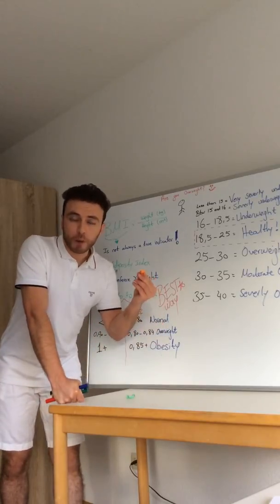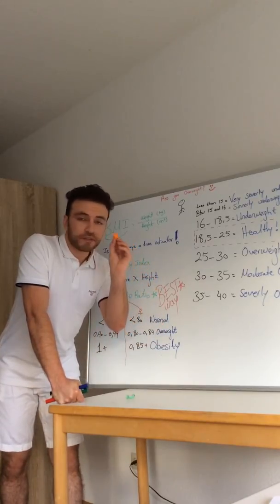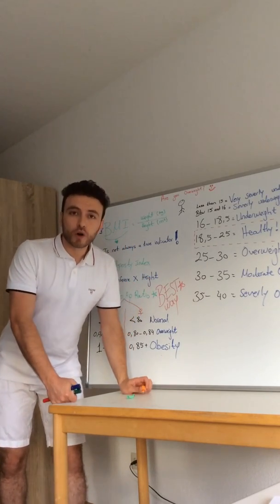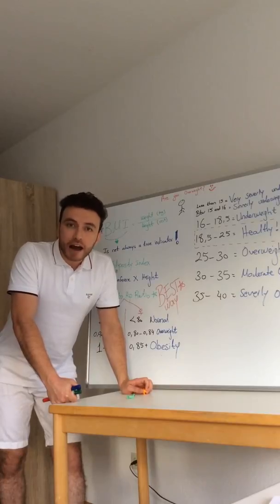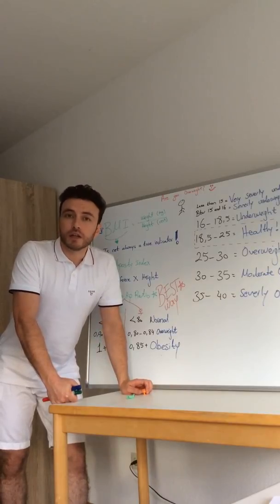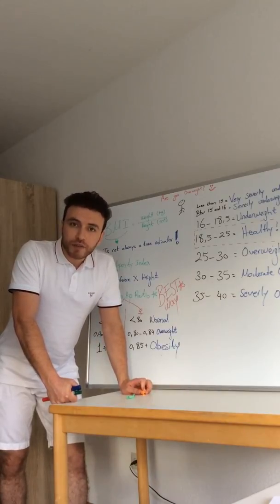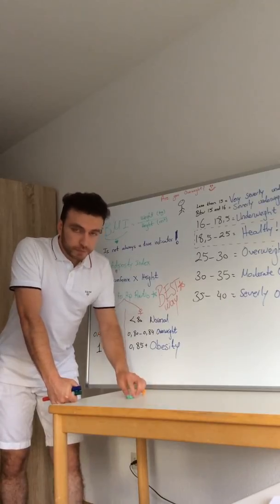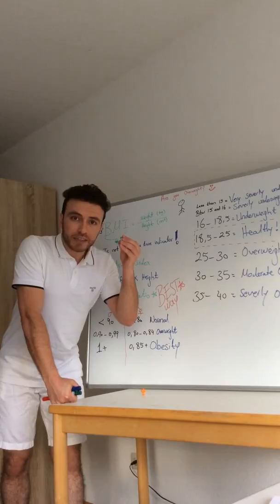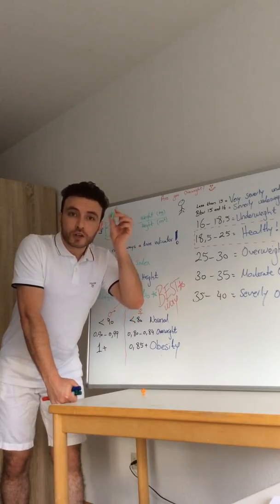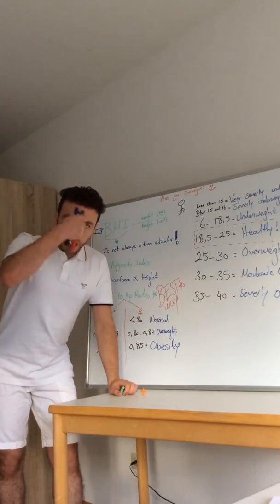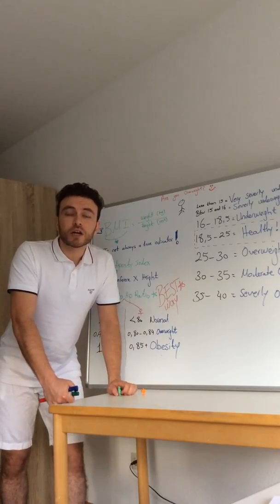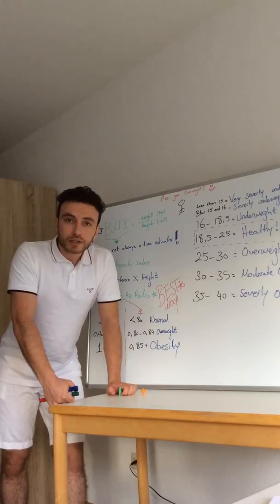There are two types of obesity. There is an apple-shaped obesity, which is more fat in the belly — that is more risky because you have more risks for cardiovascular disease, heart attack, and strokes. But if your body fat is distributed equally to all your body, then you have less risk for cardiovascular disease and stroke.